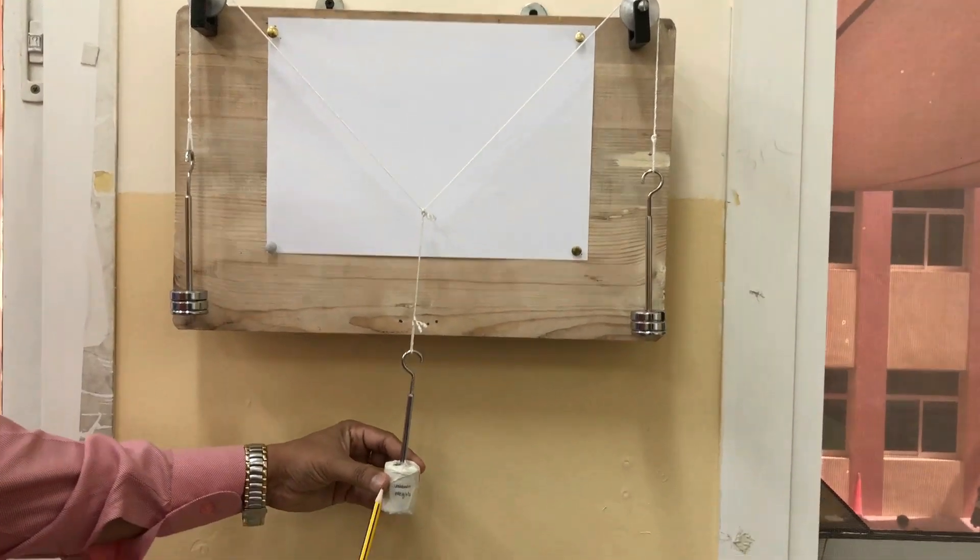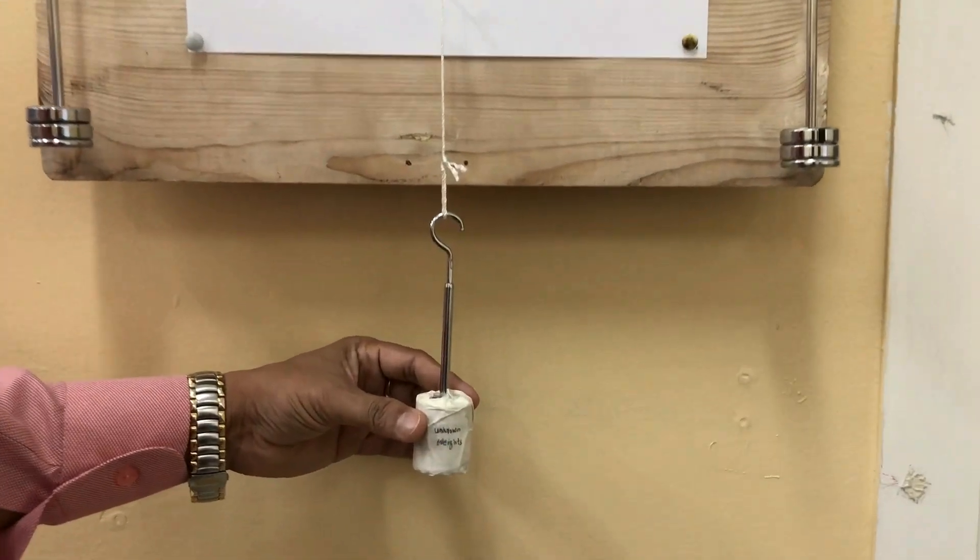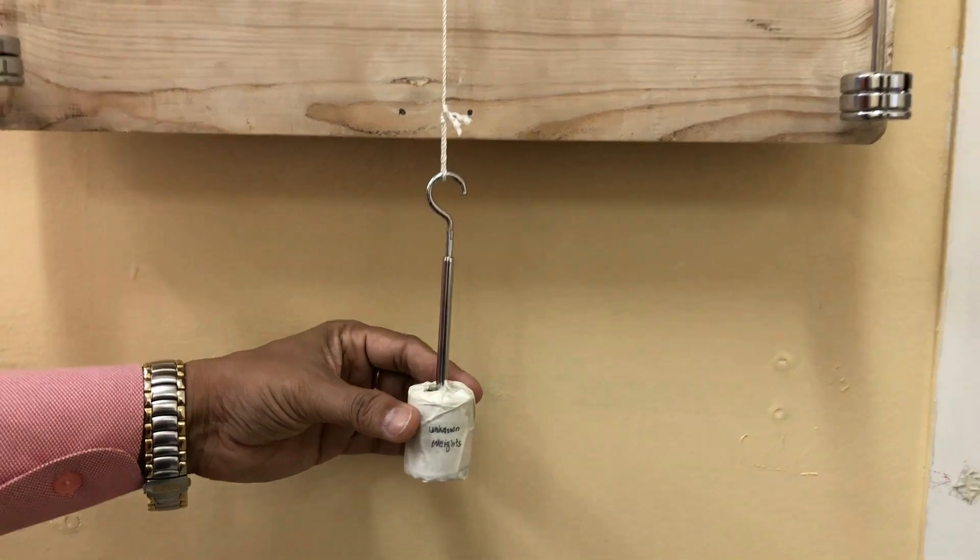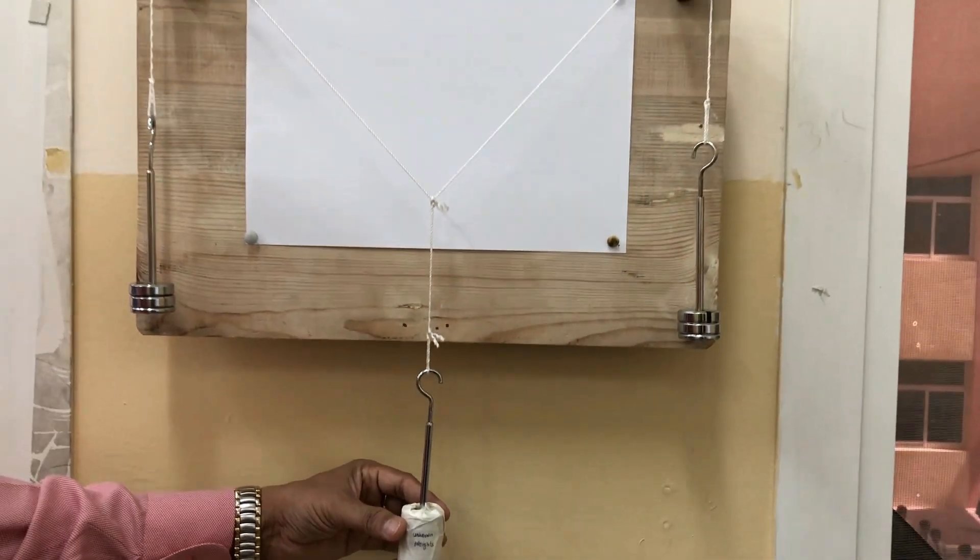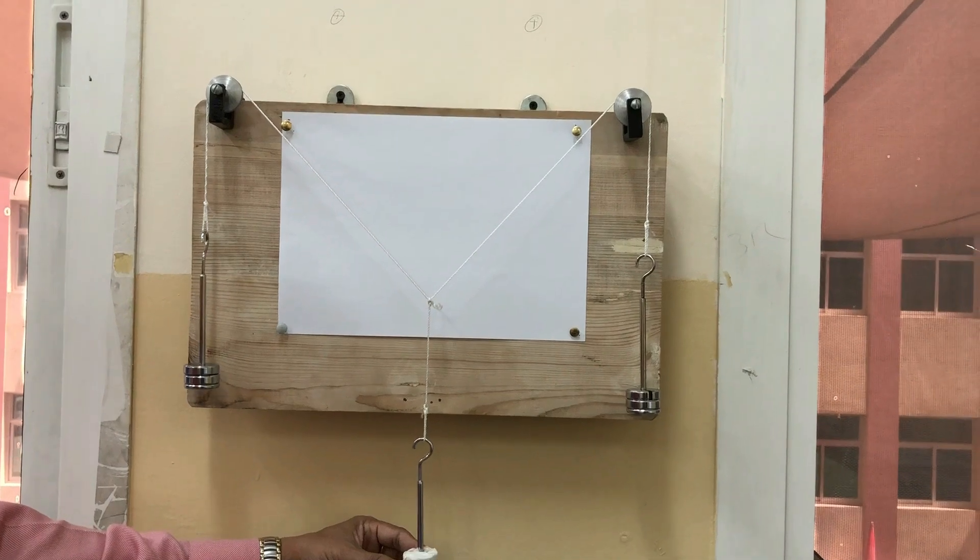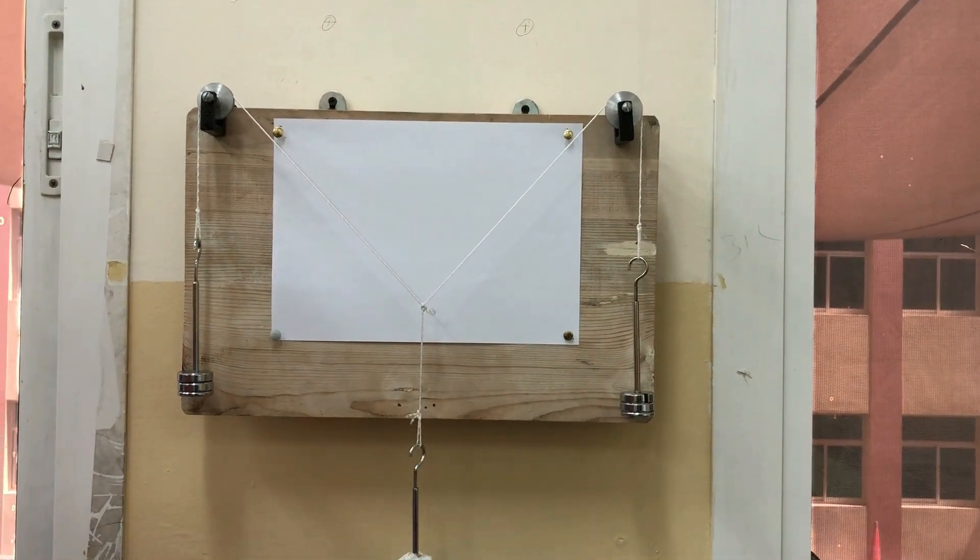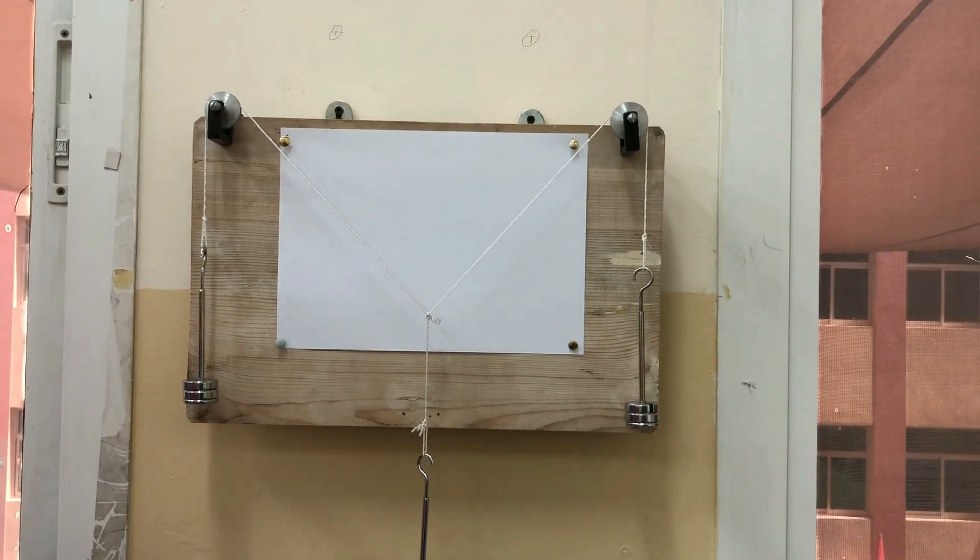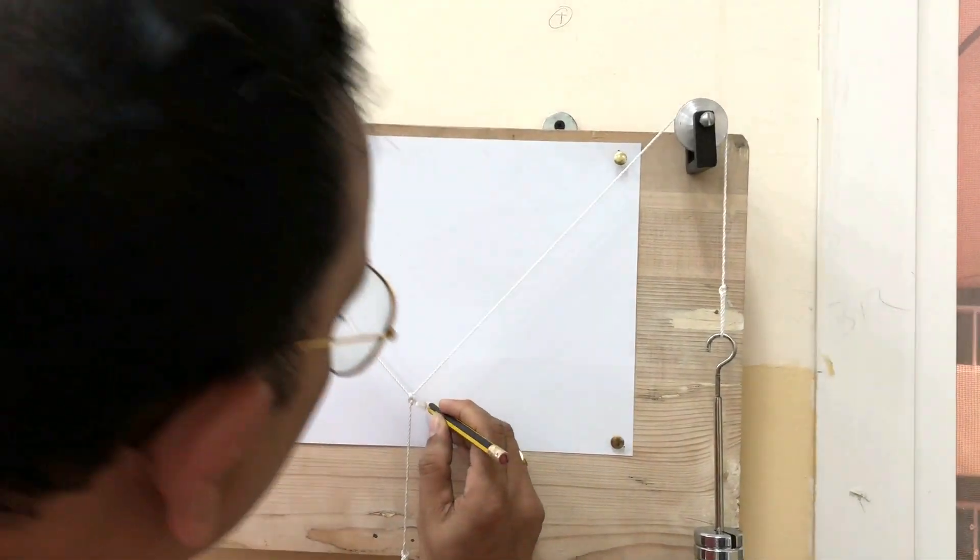So this is the unknown weight. You can mark this point as O.